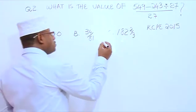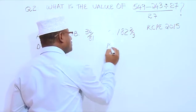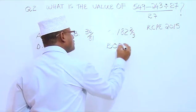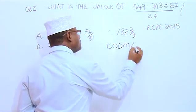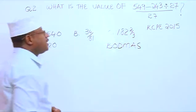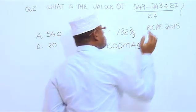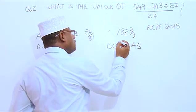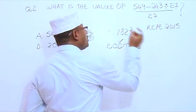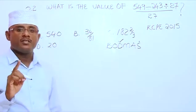We can see we have subtraction and division. Division comes before subtraction, so we are going to start with division first.